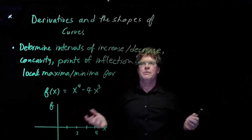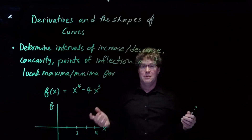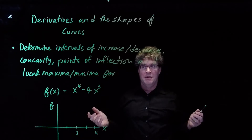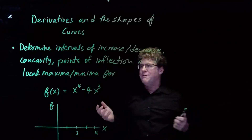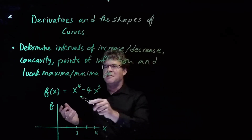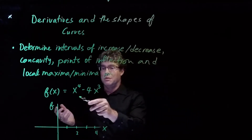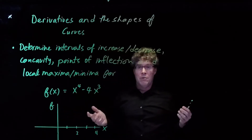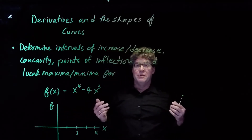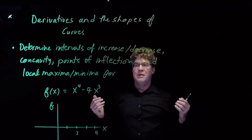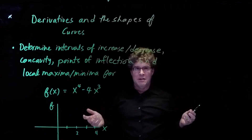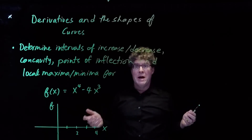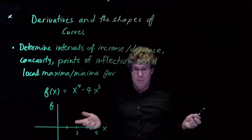I want to talk about what derivatives tell us about the shape of a curve. We have a curve here: f of x is x to the fourth minus 4x cubed. We want to work out the intervals of increase and decrease, the concavity, the points of inflection, and the local maxima and minima.